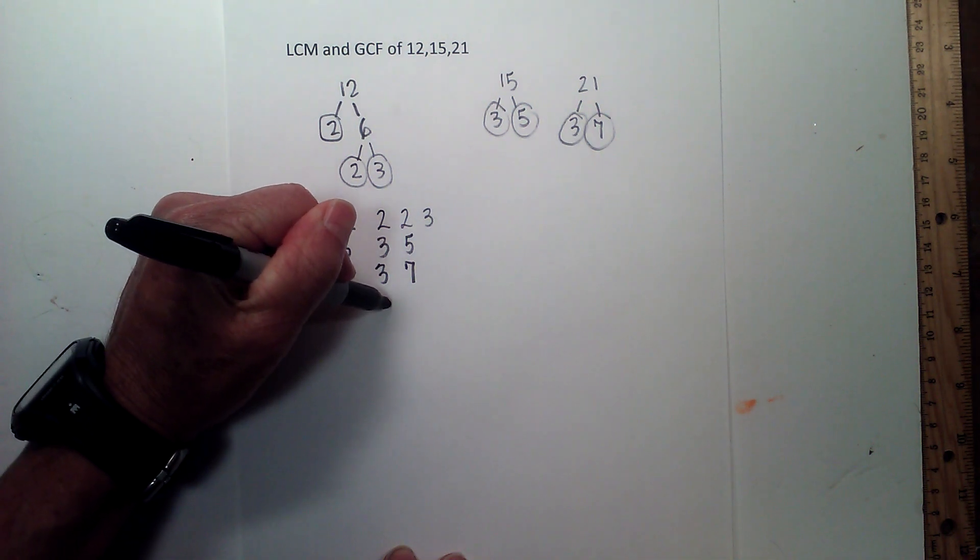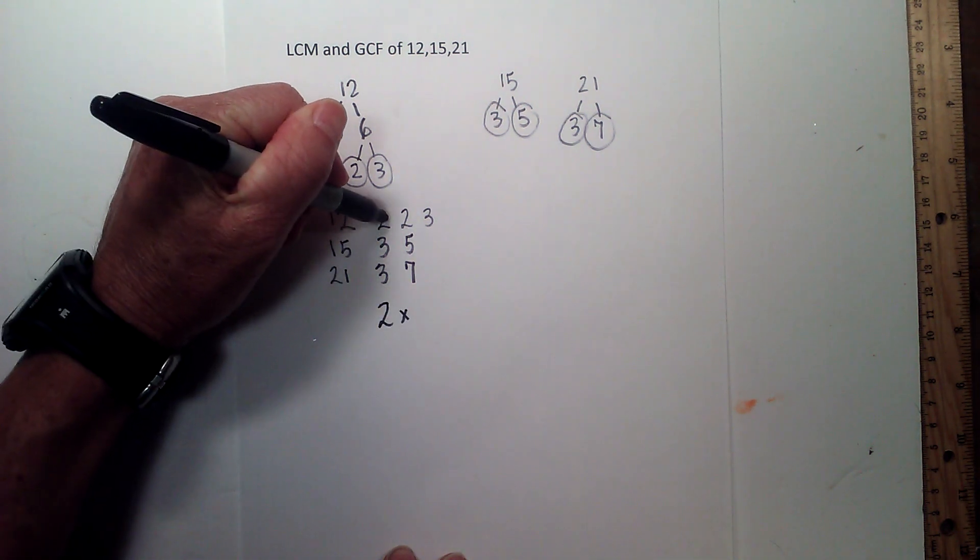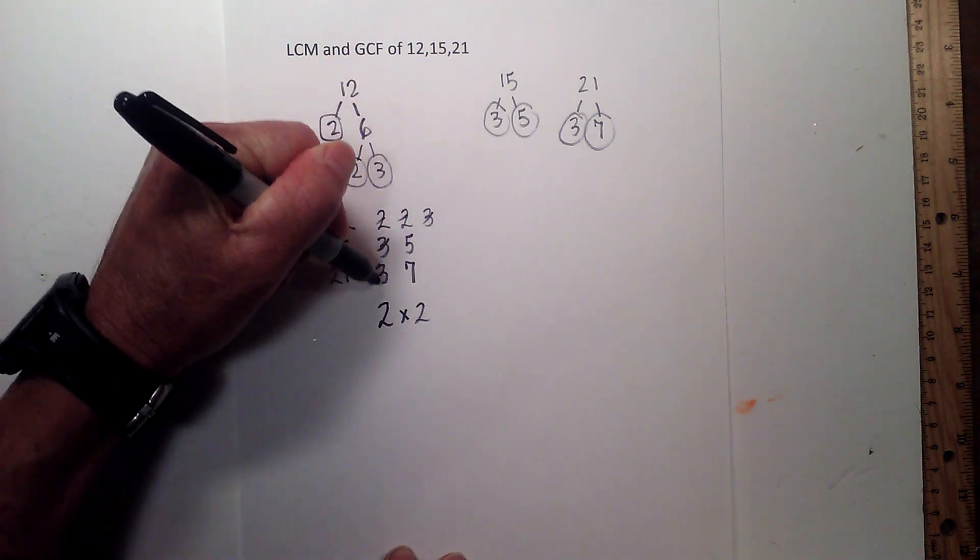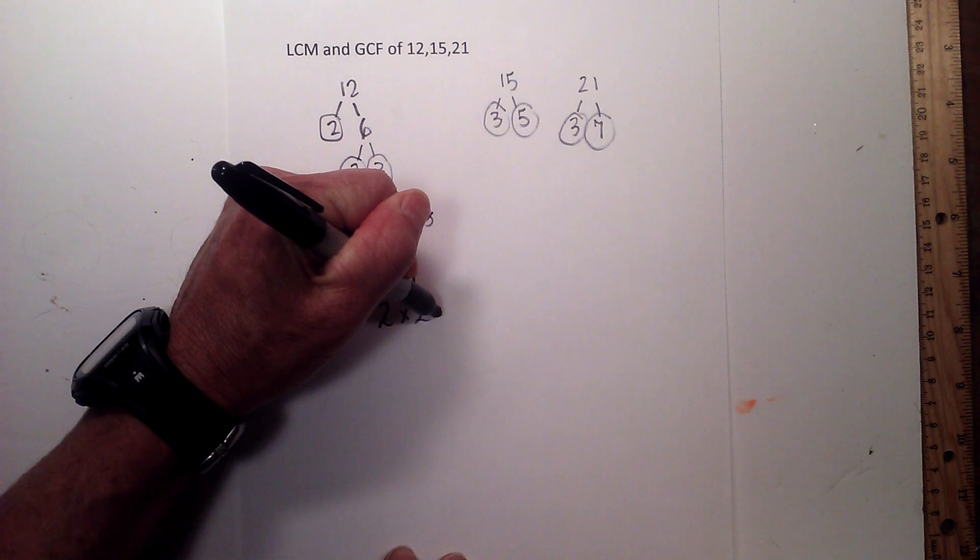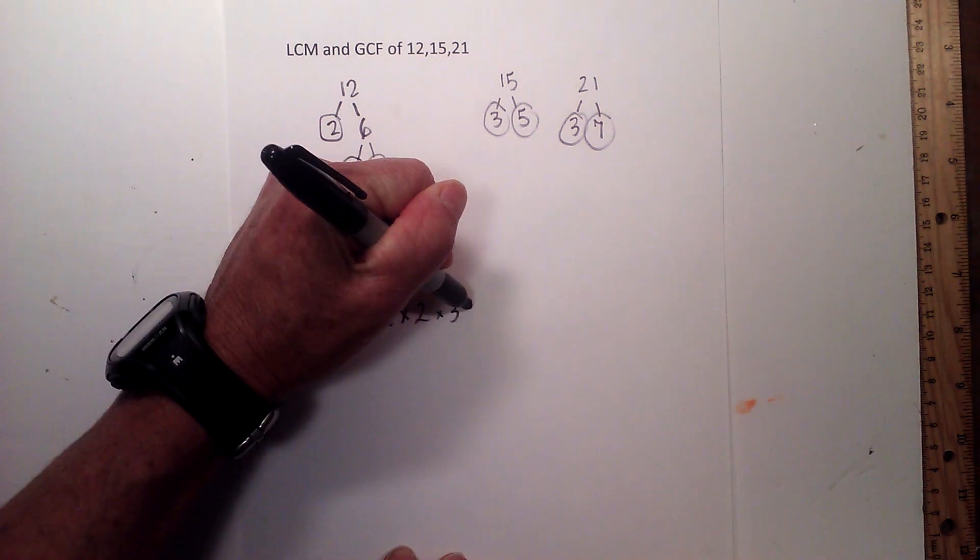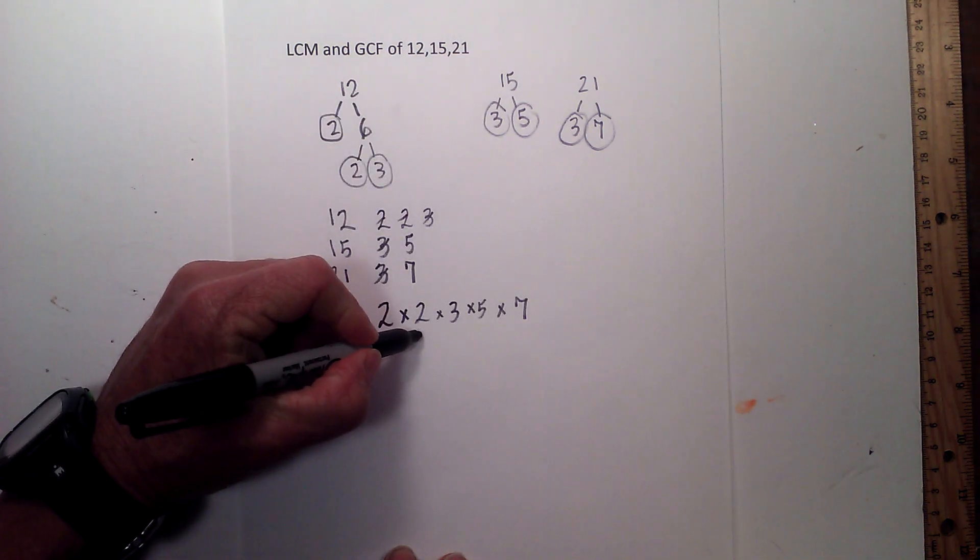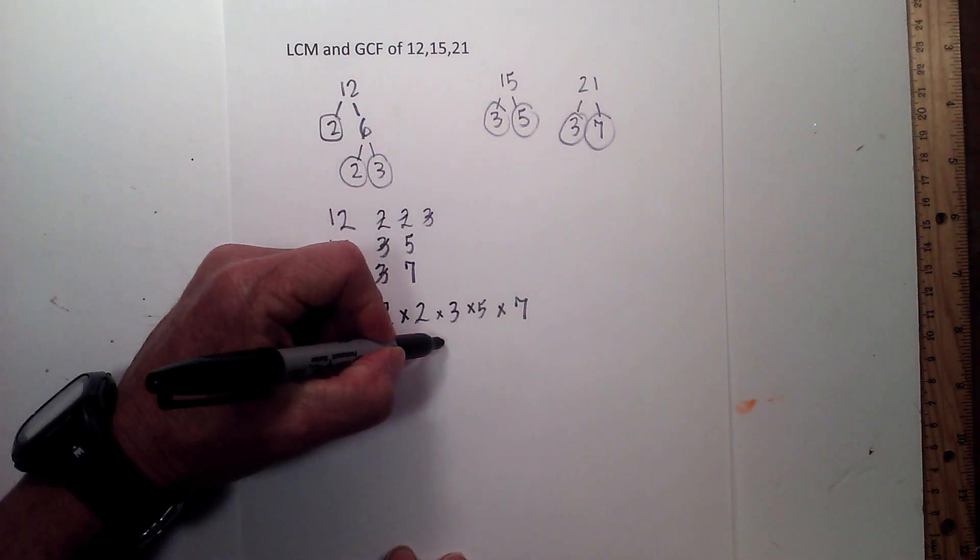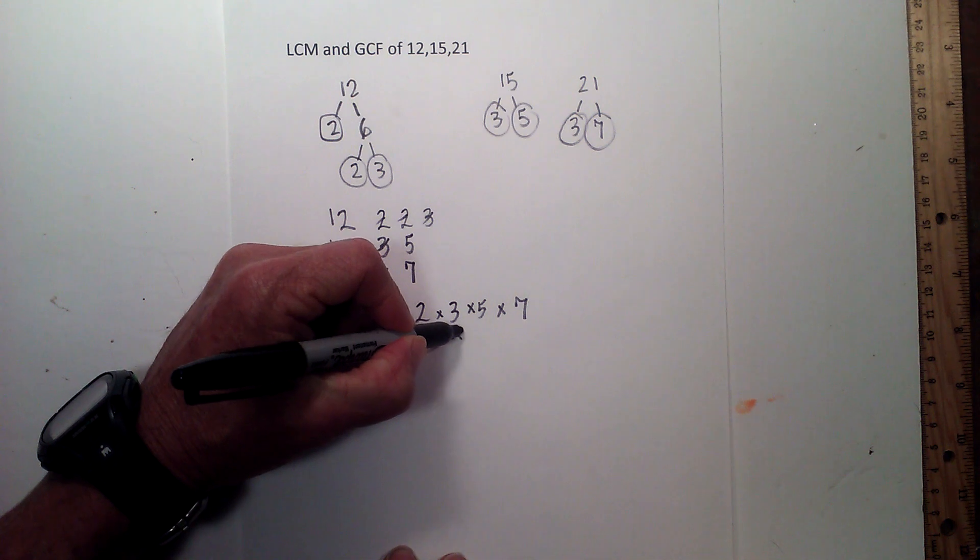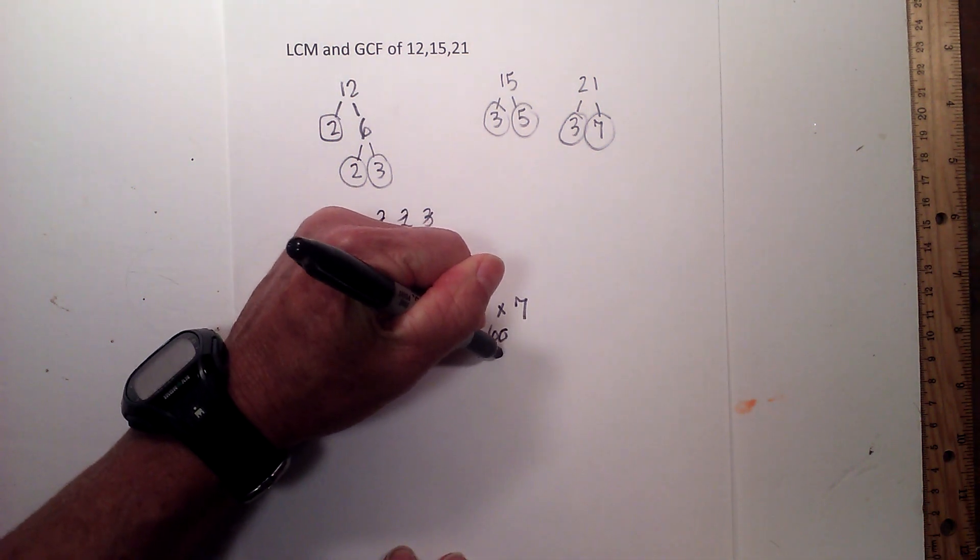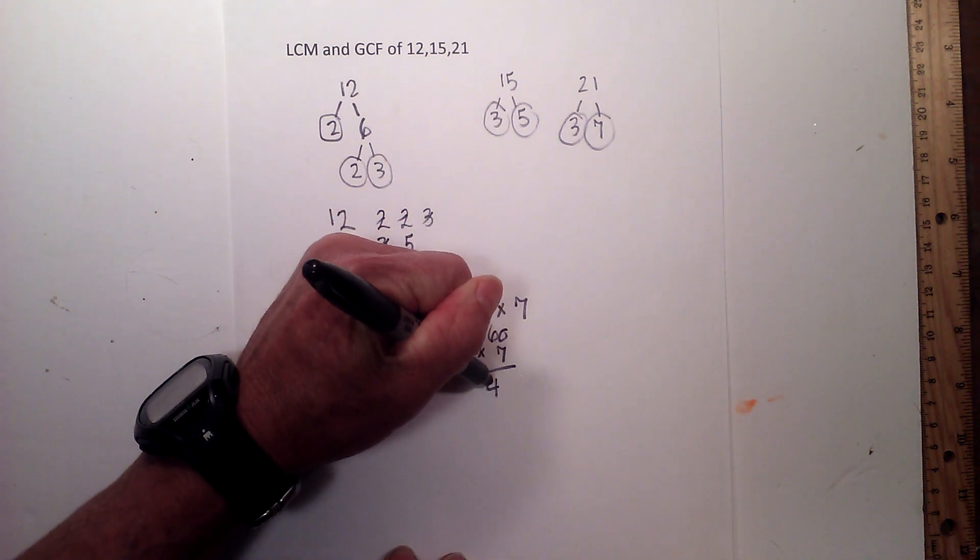So I will have 2 times 2 times 3, but notice how it is in all 3 numbers. So it will just be times 3 times 5 times 7, 2 times 2 is 4, 4 times 3 is 12, 12 times 5 is 60, and 60 times 7 is 420.